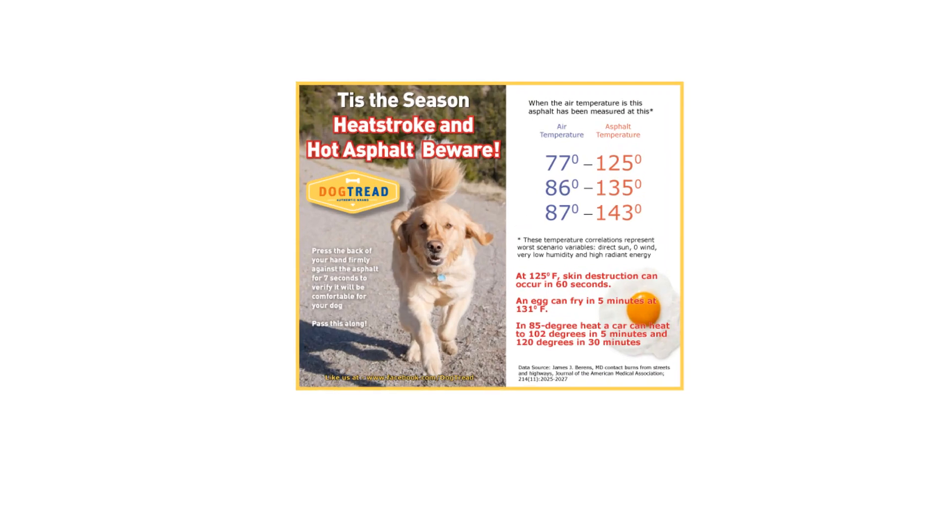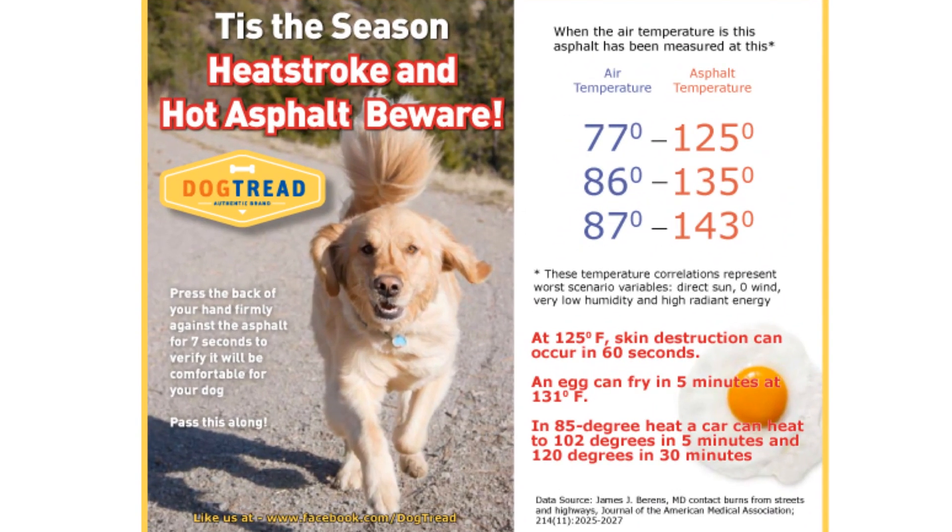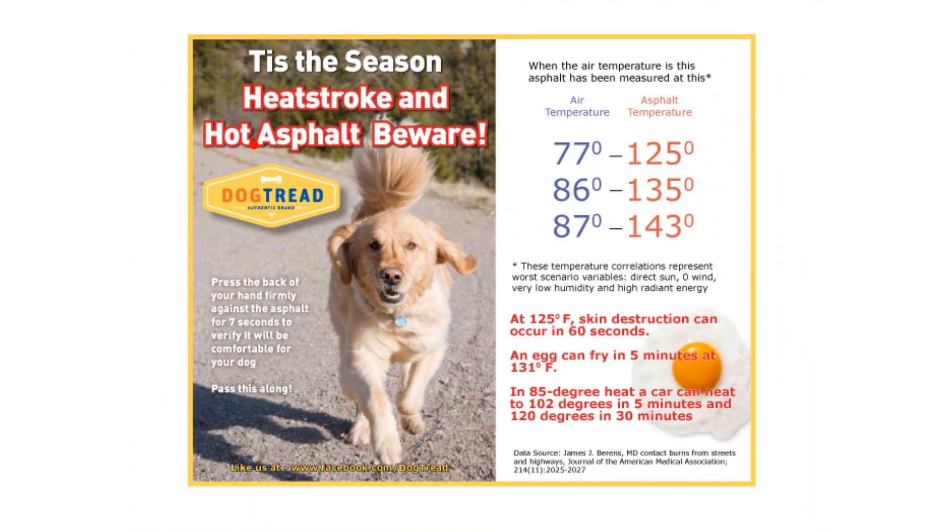We want to keep our pets, and in this case dogs, comfortable when it gets hot. I found this little public service announcement, I guess. It's talking about heat stroke and hot asphalt. Asphalt is usually black, and we haven't said it yet - we will in the upcoming thermal lesson - but black is a color that absorbs the most radiant heat from the sun. Here they're trying to say, I'm over here on the far left, press the back of your hand firmly against the asphalt for seven seconds to verify that it's comfortable for your dog. Anyway, they showed air temperature - that would be ambient temperature around the dog, or at least maybe up a little higher. They didn't say where they measured it. And then they measured the asphalt. You can do that with one of those infrared thermometers.